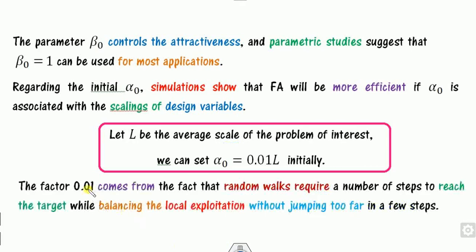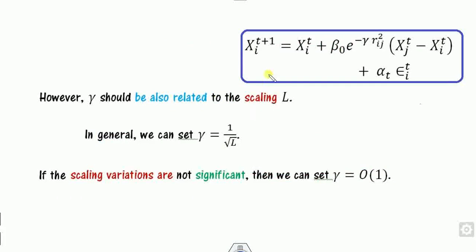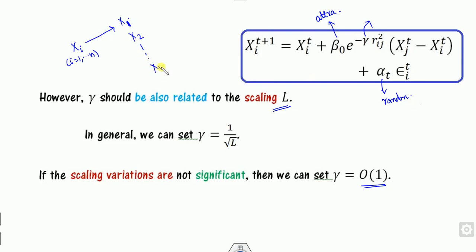The value 0.01 comes from the fact that a random walk requires on the order of 1/100 steps to reach the target, and it locally balances the exploitation phase of the meta-heuristic technique. Gamma is related to the scaling factor parameter and is defined as 1 divided by the square root of L. So there is essentially only one unknown parameter of order 1. For position xi, particles j have n choices of which firefly to be attracted toward, giving order n, but we define it as order 1.